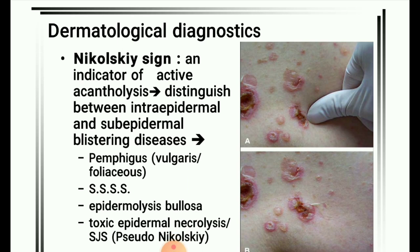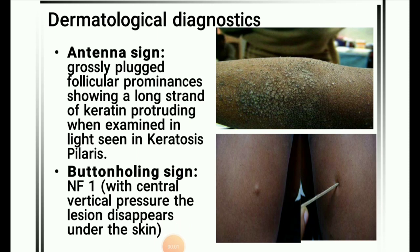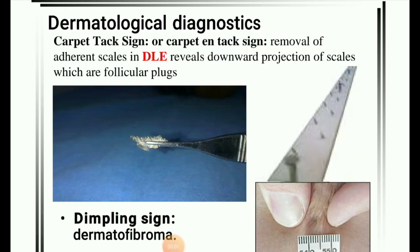Next image: Nikolsky sign — an indicator of active acantholysis that distinguishes between intraepidermal and subepidermal blistering diseases, seen in pemphigus vulgaris, epidermolysis bullosa, toxic epidermal necrolysis, staphylococcal scalded skin syndrome. Antenna sign: grossly plugged follicular prominences showing a long strand of keratin protruding in light, seen in keratosis pilaris. Buttonhole sign: with central vertical pressure the lesion disappears under the skin.